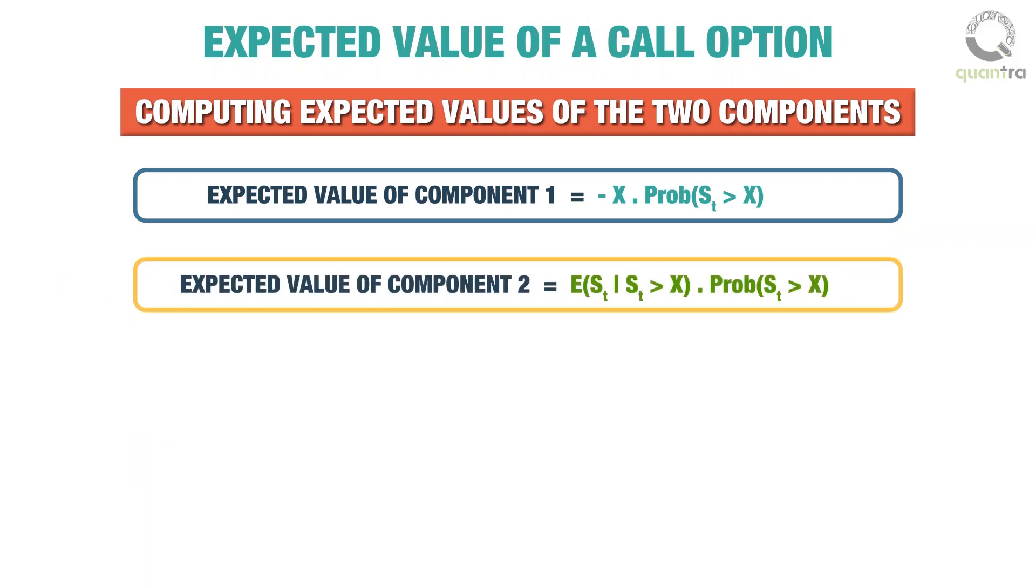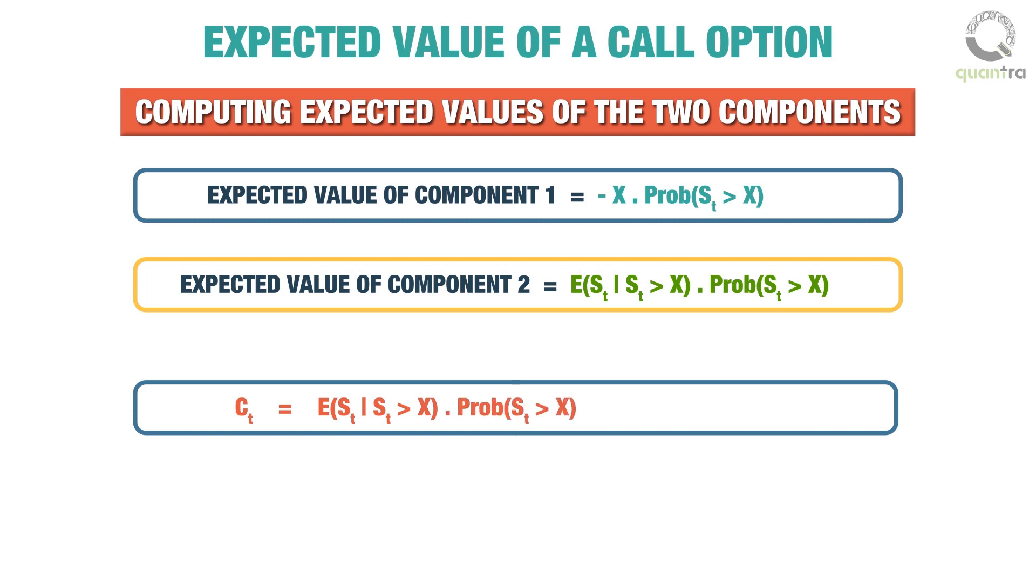On combining these two terms, we get the equation: Ct, price of call option, is equal to expected value of St given that St is greater than X, multiplied by the probability of St greater than X, minus X into the probability of St greater than X. This formula intuitively explains the Black-Scholes formula.